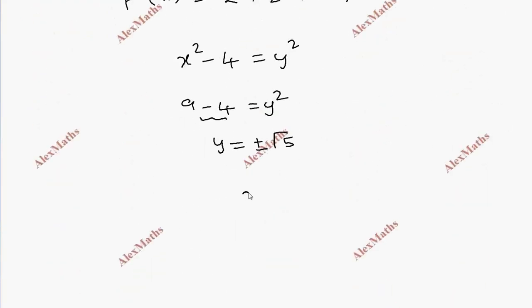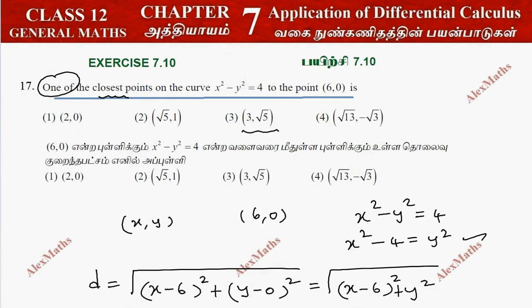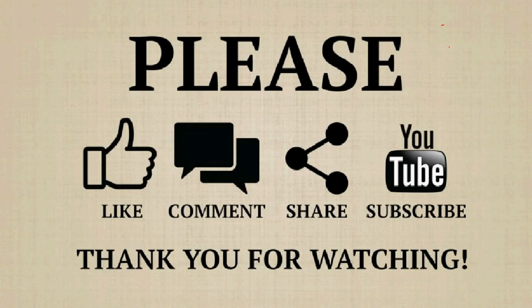Plus or minus root 5. So here we choose option 3, (3, root 5). This is one of the closest points.